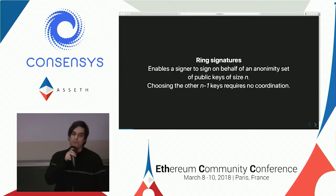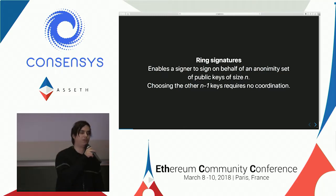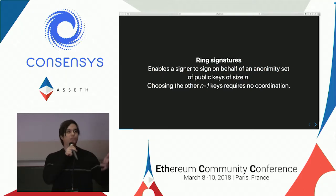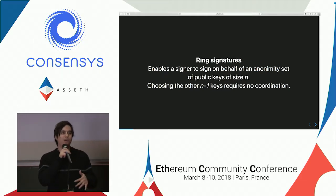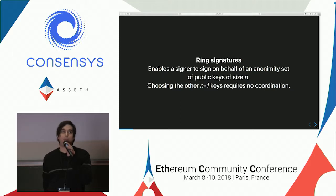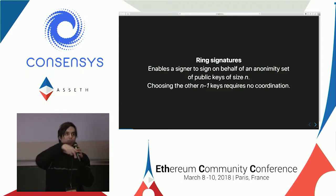Ring signatures were greatly introduced by Jacob — I couldn't do better. Basically, it allows you to sign a message on behalf of a group instead of yourself, without leaking your identity or anything about your public key. The good thing about this is that choosing the other public keys for this ring requires no coordination besides publishing them — for example, on a blockchain. So you can just select and sample from previous transactions, and they have nothing to do with their private keys.